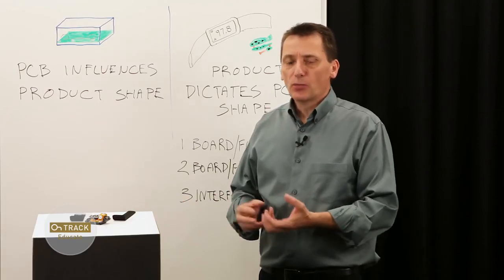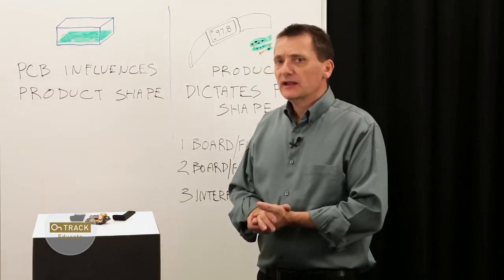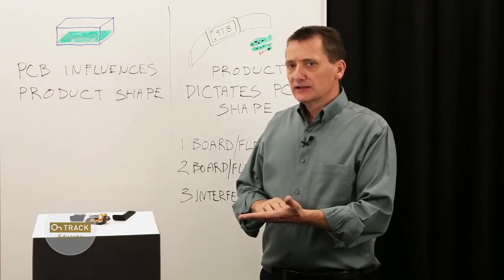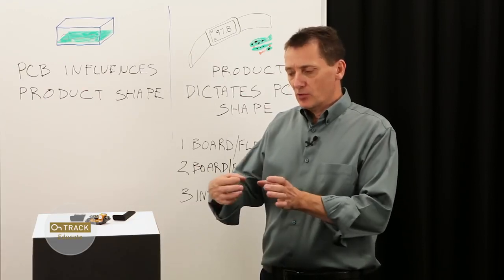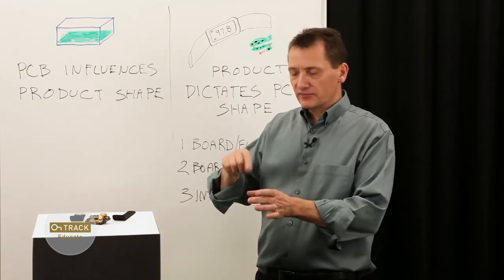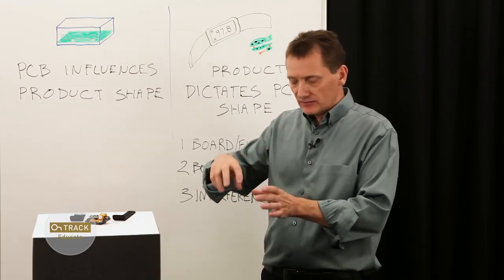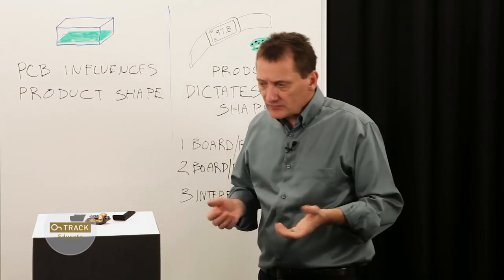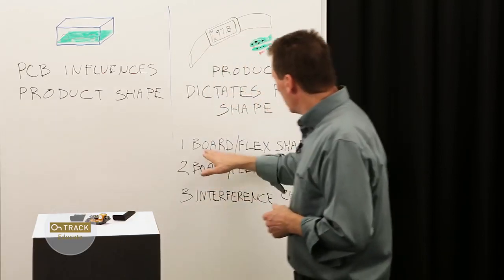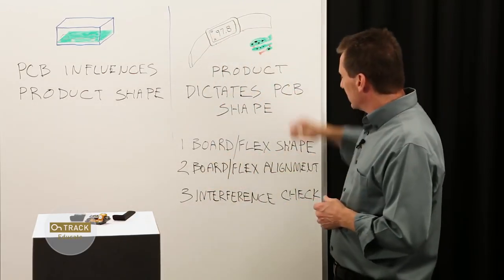You can take that information, import it as STEP format, and then you can tell the design tool, I want this particular board to have this shape. You can point to a specific model and say, make the board this shape. That's how you can get your complex, irregular shapes taken care of.